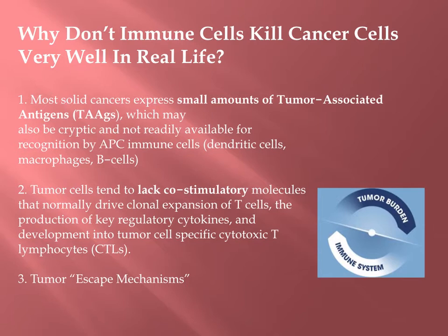Number one: most solid cancers express small amounts of tumor-associated antigens, which affect the dendritic cells. Dendritic cells are cells in your immune system that are differentiating into either killer cells or other cells. These tumor-associated antigens affect the differentiation of dendritic cells away from becoming killer cells. Tumors and cancers themselves have the ability to influence immune cell production — that's the key.